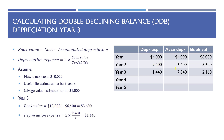In year three, the new book value is $10,000 minus accumulated depreciation of $6,400, giving a book value of $3,600. Depreciation expense is two times $3,600 divided by five, or $1,440. So depreciation expense in year three is $1,440, accumulated depreciation is $7,840 ($6,400 plus $1,440), and book value is $2,160.